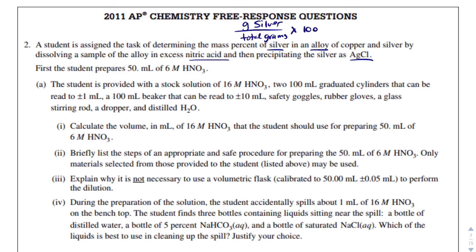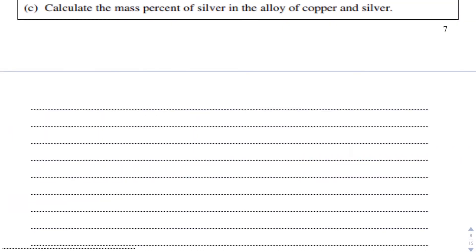It says calculate the volume in milliliters of 16 molar nitric acid that the student should use for preparing 50 milliliters of 6 molar HNO3. This is a dilution, so we need to use the dilution formula. In part A(i), we write M1V1 equals M2V2. Our dilution goes from 16 molar nitric acid down to 6 molar, and we need 50 milliliters of that 6 molar. If I take 6 times 50 and divide by 16, my V1 is 18.75 milliliters of 16 molar HNO3.